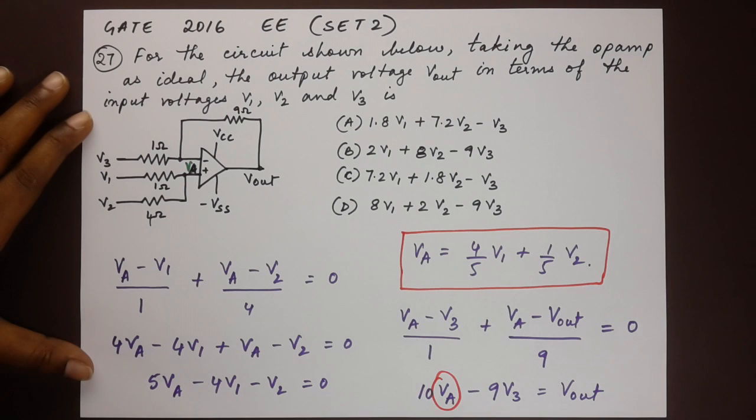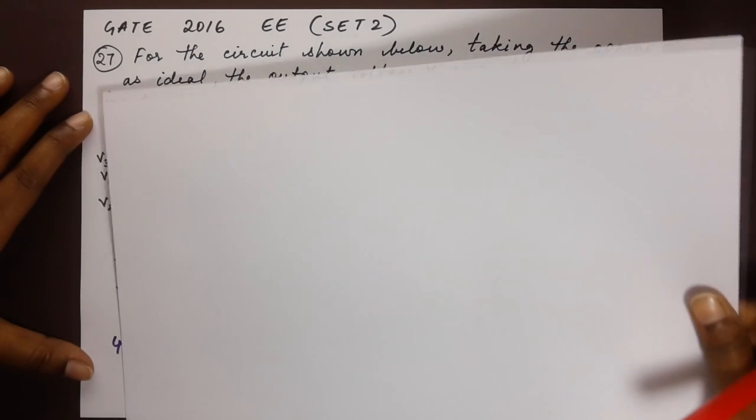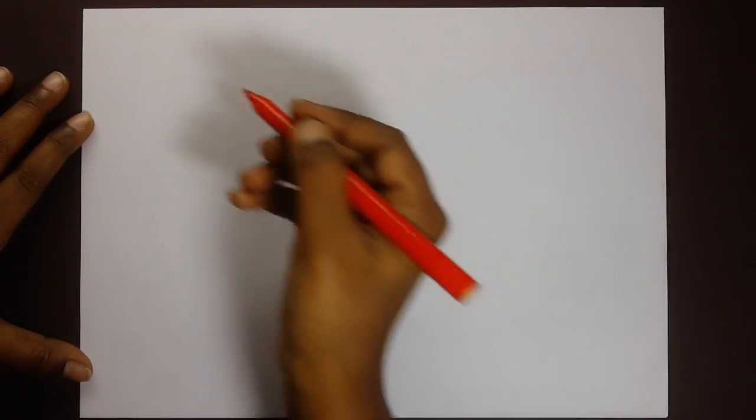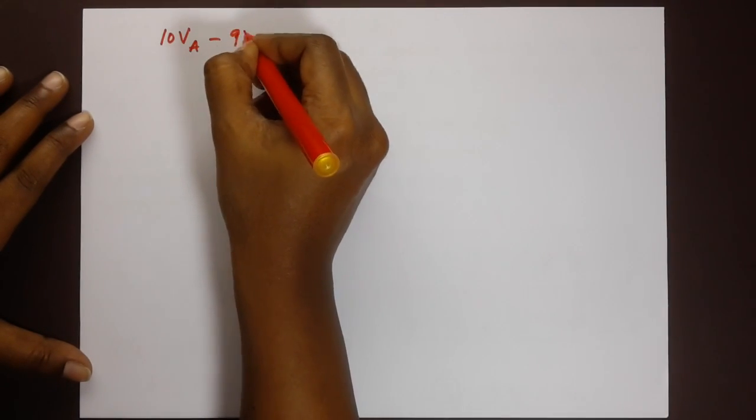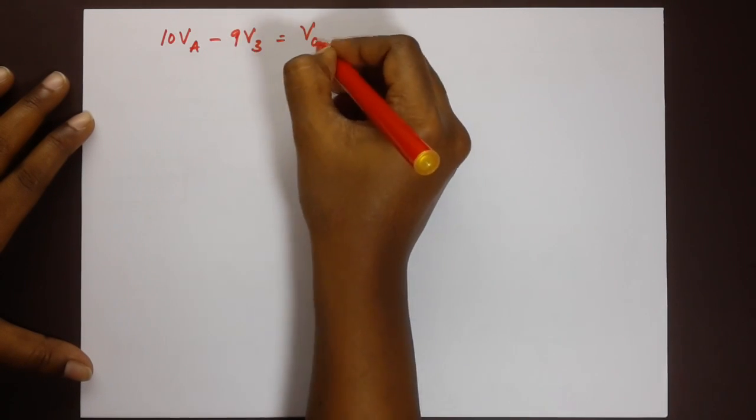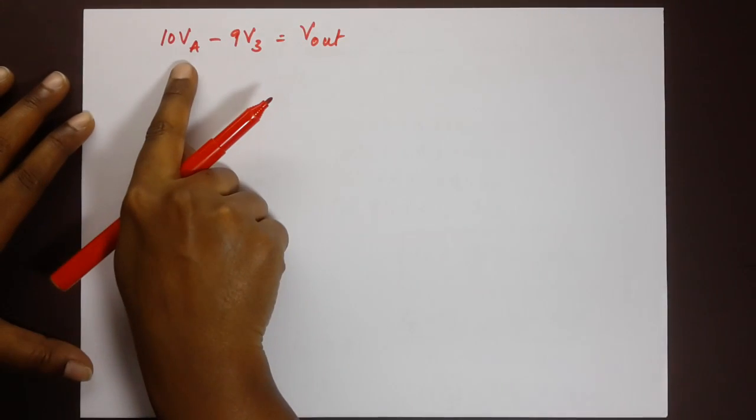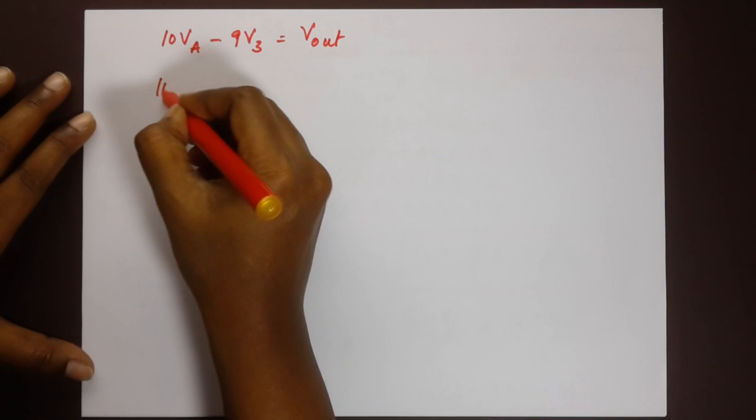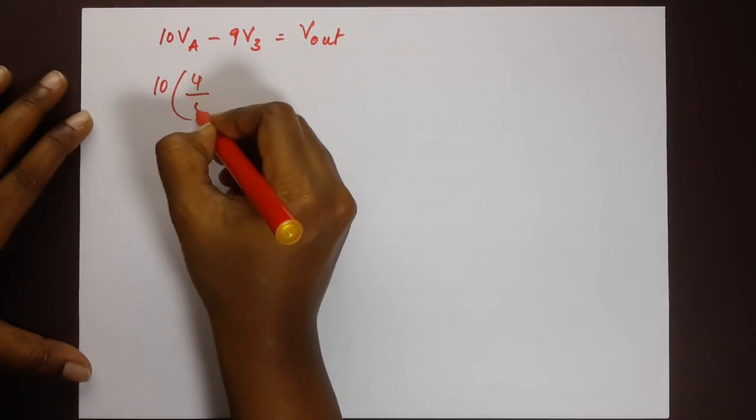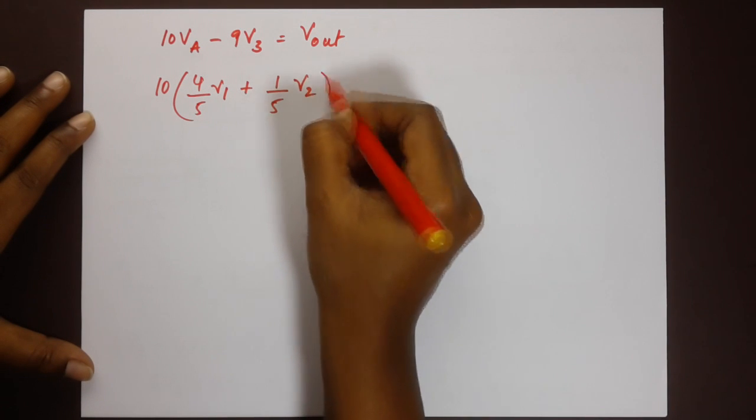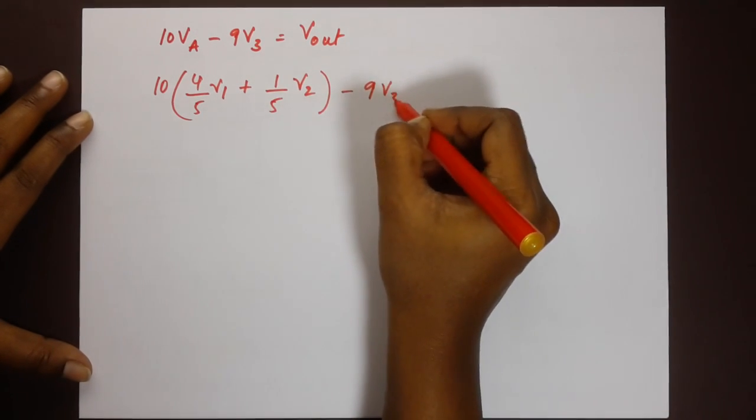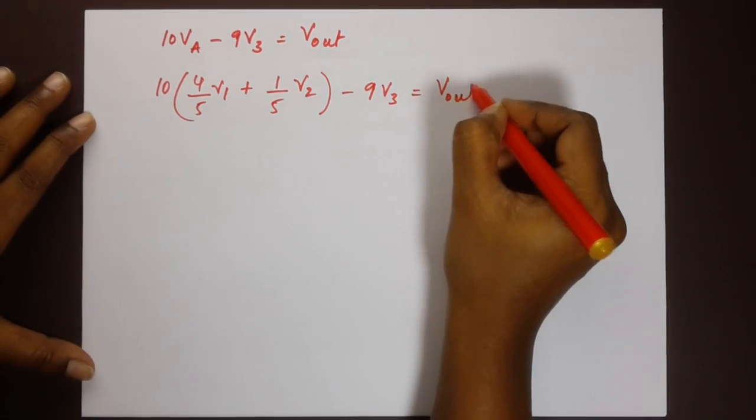Let me just get another piece of paper. The equation is 10Va minus 9V3 is equal to Vout. We have the previous equation for Va. That would be 10 into 4 by 5 V1 plus 1 by 5 V2 minus 9V3 is equal to Vout.